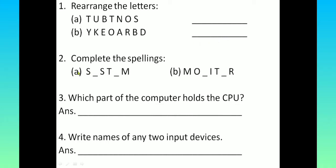Is that clear to you? Now let's read Question Number 2: complete the spellings. Children, you have to fill the correct letter to complete these spellings. To complete these words, you have to fill the correct letter in the blank place. You can see here there are two words written. So children, let's just complete these spellings.